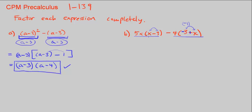And that would make this the same as (x-3), right? x minus 3. So let's do that. 5x times (x-3) minus 4, and let's factor out a negative 1, and then we get negative 3 plus x or (x-3).